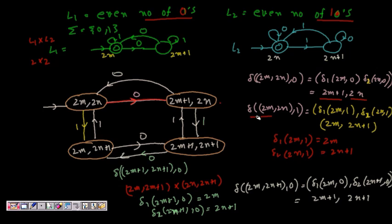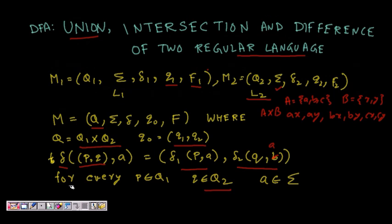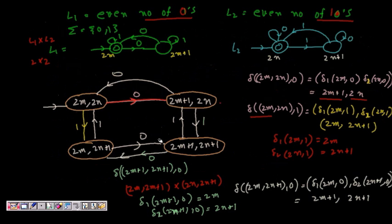The key formula is: if you are in state delta(p, q) and get input a, it becomes (delta1(p, a), delta2(q, a)). This defines all transitions in the cross-product automaton.